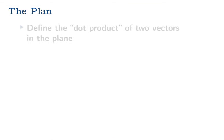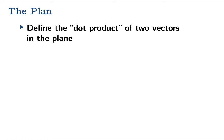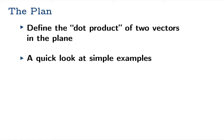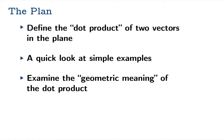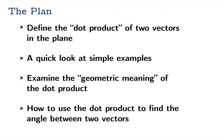The goal of this video is to introduce you to the notion of the dot product of two vectors in the plane. We're going to first define the dot product of two vectors, look at some simple examples to make sure we know how to calculate them, and then examine the geometric meaning of the dot product and learn how to use dot products to find the angle between two given vectors.